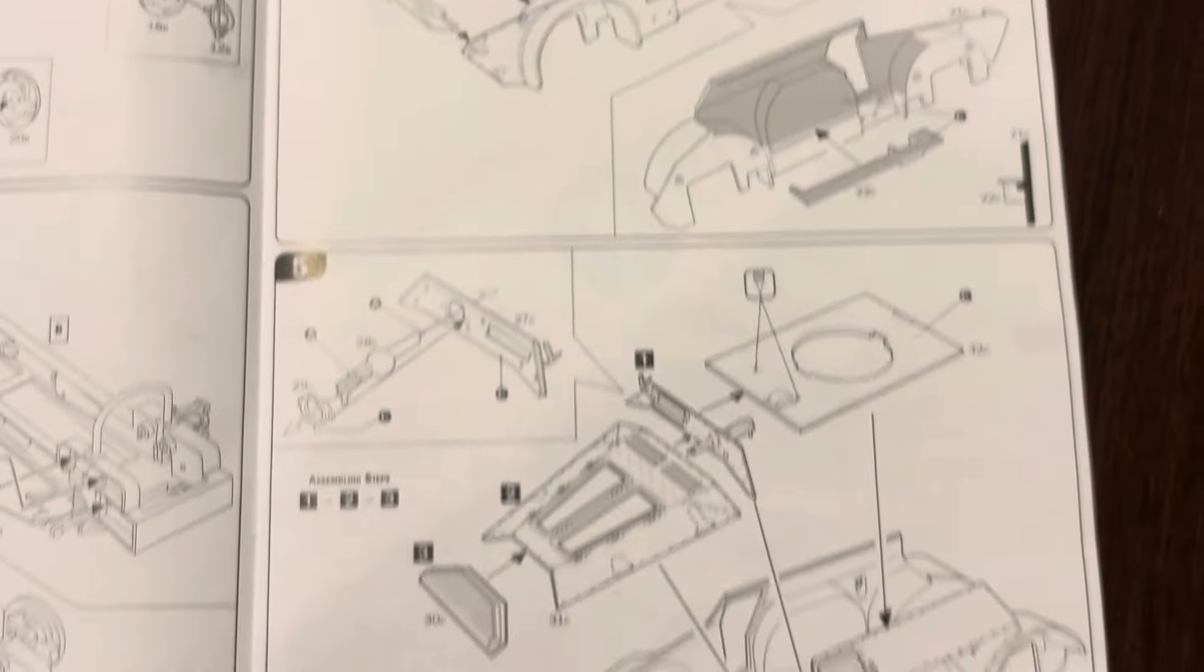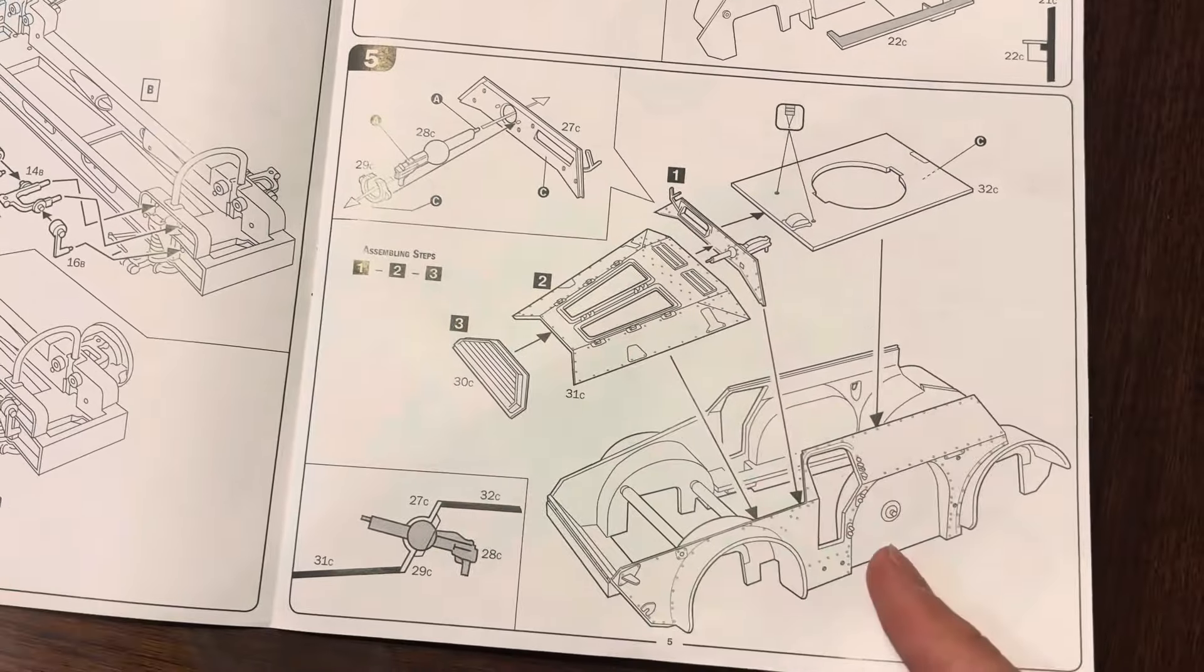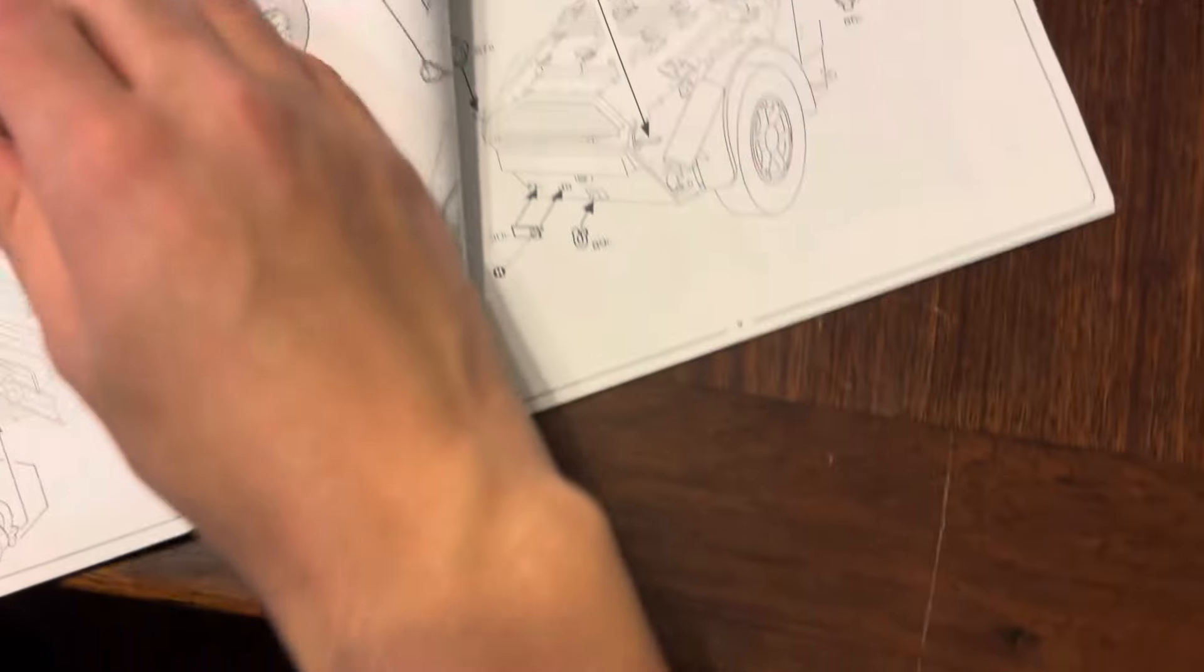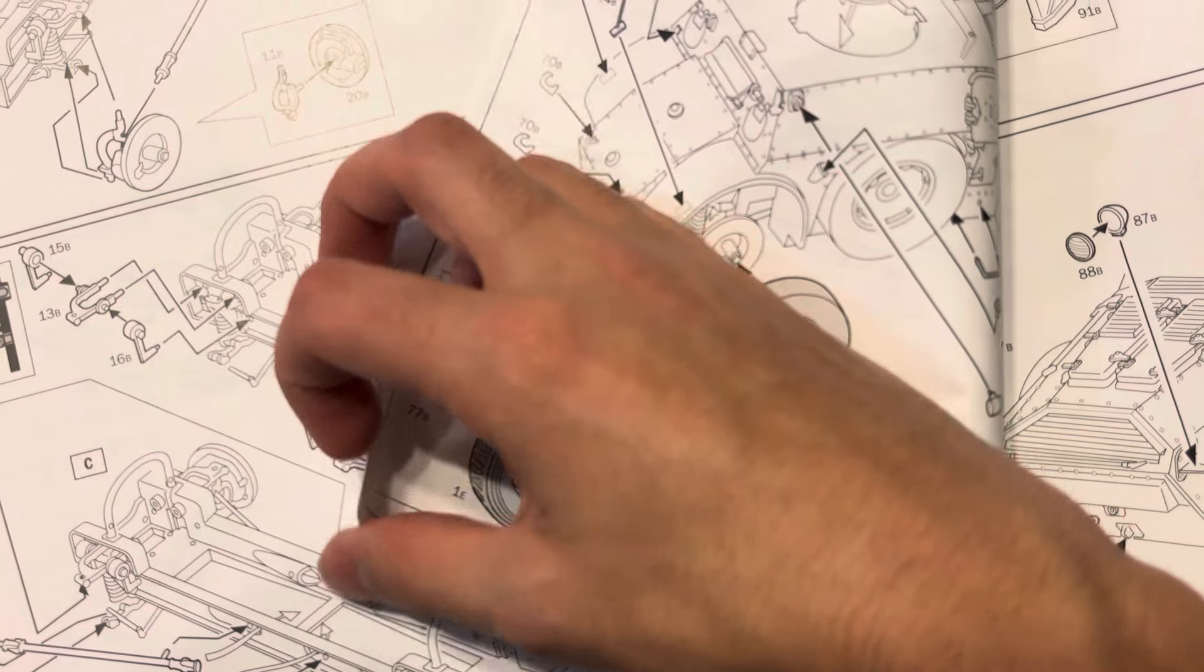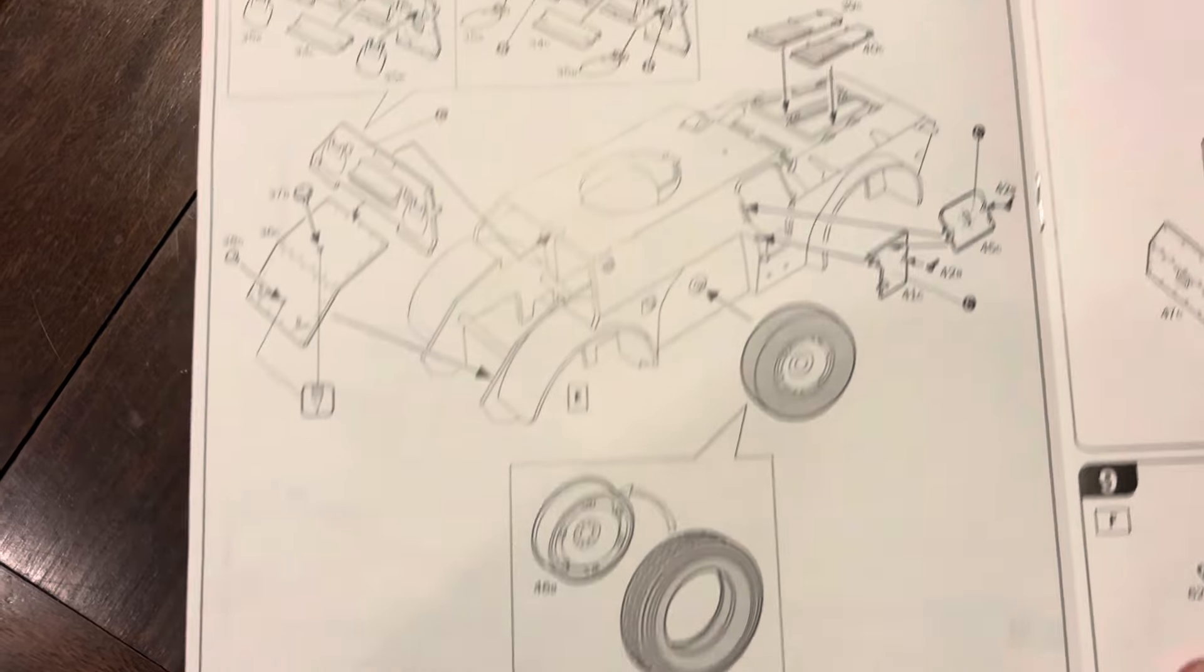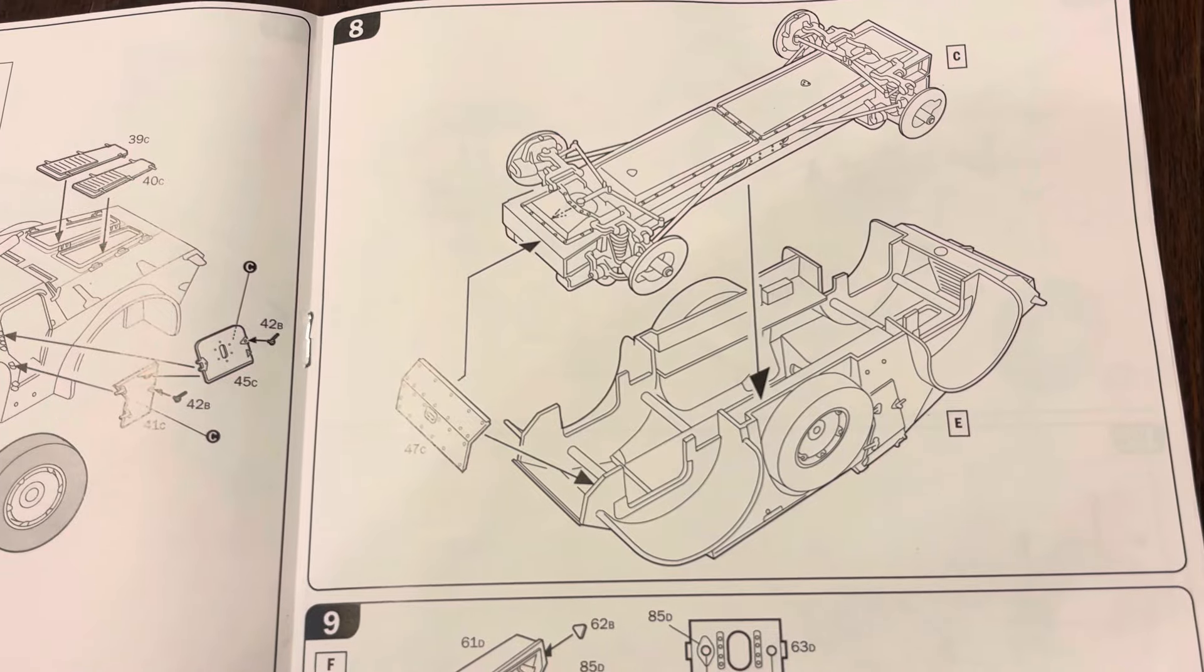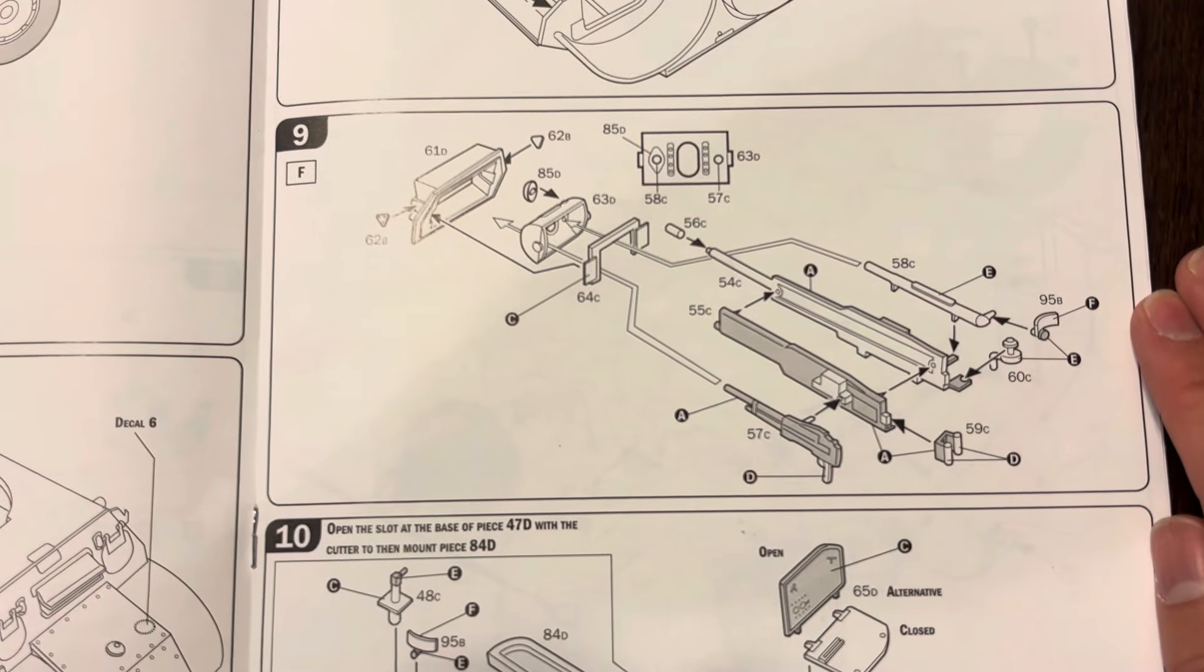Step five is the machine gun, putting on the roof of the car. Step six is the front window or something. Step seven is the spare wheels and the door. Step eight is adding the undercarriage to the main body. Step nine is putting the main gun together as well as the mantlet.